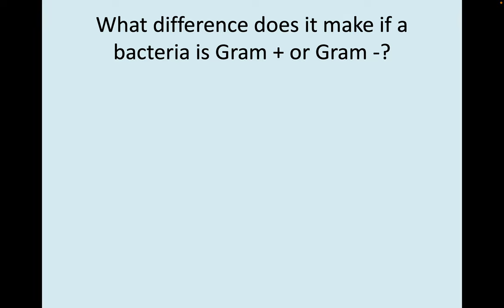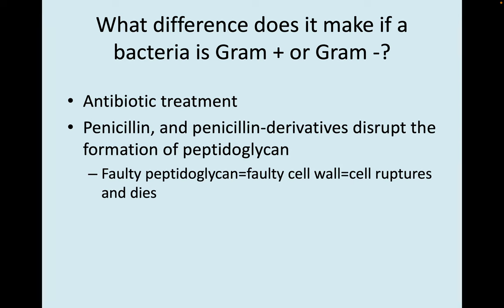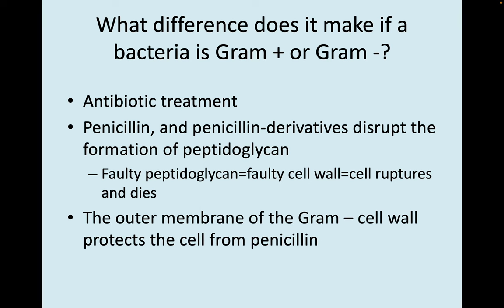What difference does it make if a bacterium is gram-positive or gram-negative? It makes a big difference for how you treat an infection. Penicillin and penicillin derivatives disrupt the formation of peptidoglycan — a faulty peptidoglycan layer causes a faulty cell wall, and faulty cell walls rupture and cause the cell to die. So penicillins can be very effective against gram-positive infections. However, the outer membrane of gram-negative cell walls protects those cells from penicillin, so treating gram-negative infections with penicillin won't do any good.